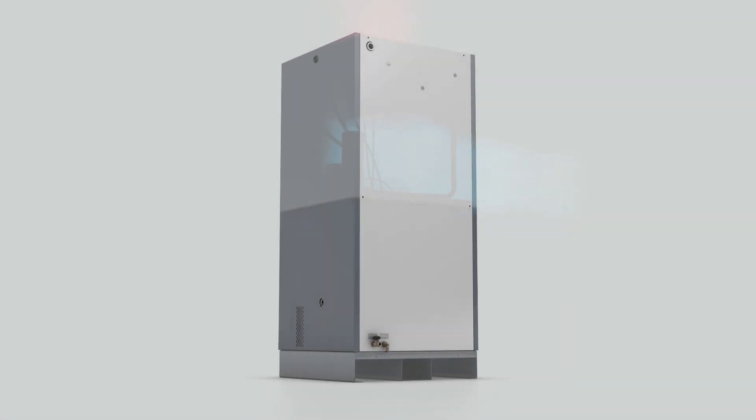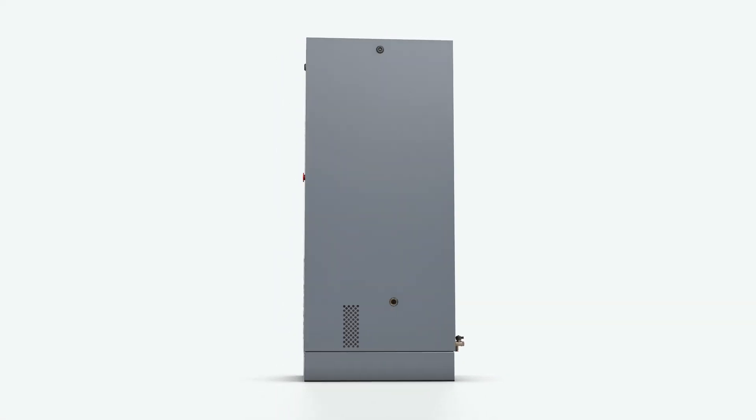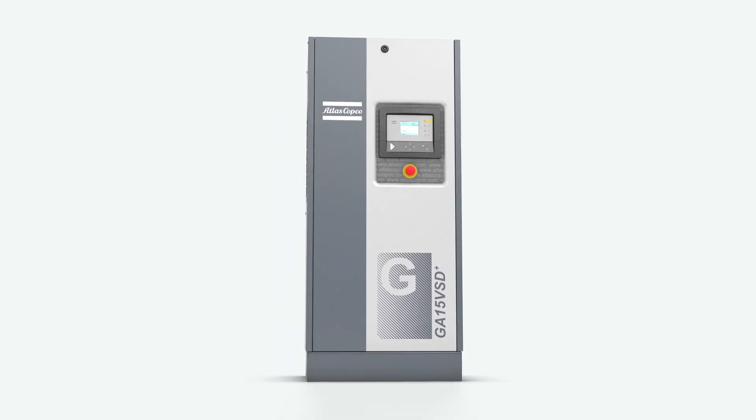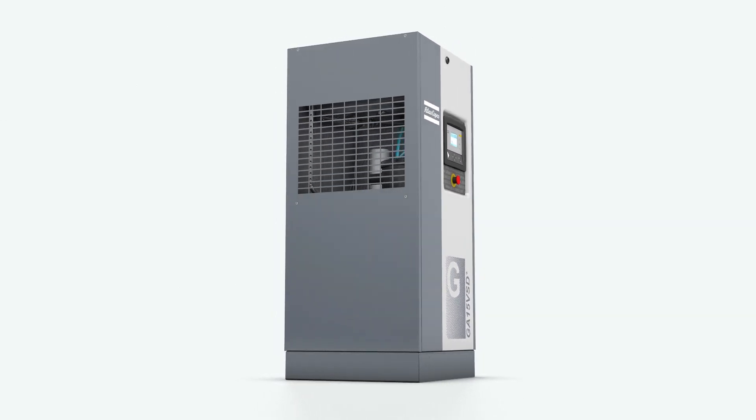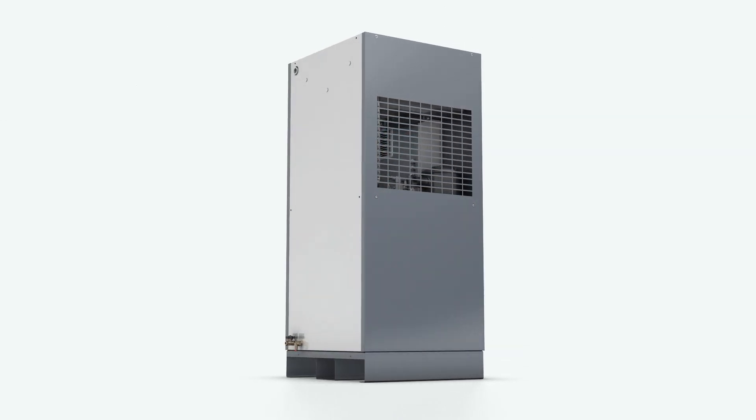In short, the GA VSD Plus has a ventilation flow that is limited to the top cool canopy. This short track allowed us to size down the fan and to save energy.